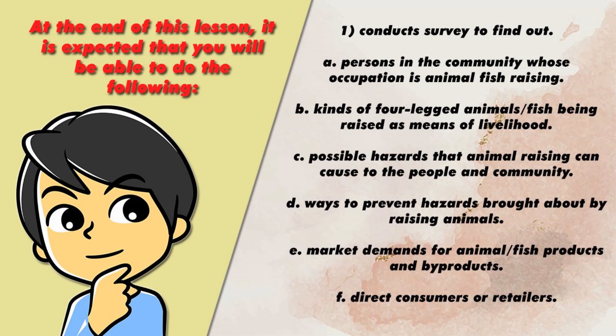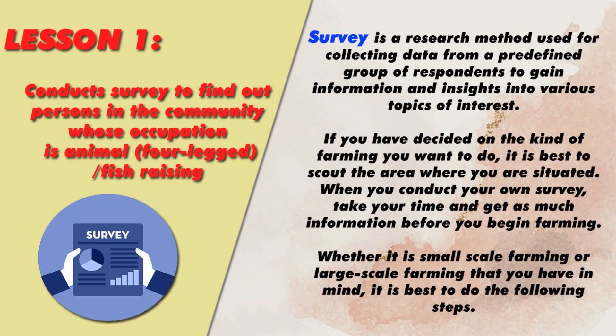At the end of this lesson, it is expected that you will be able to do the following: survey to find out persons in the community whose occupation is animal or fish raising; kinds of four-legged animals and fish being raised as means of livelihood; possible hazards that animal raising can cause to people and the community; ways to prevent hazards brought about by raising animals; market demands for animal and fish products and byproducts; and direct consumers or retailers.